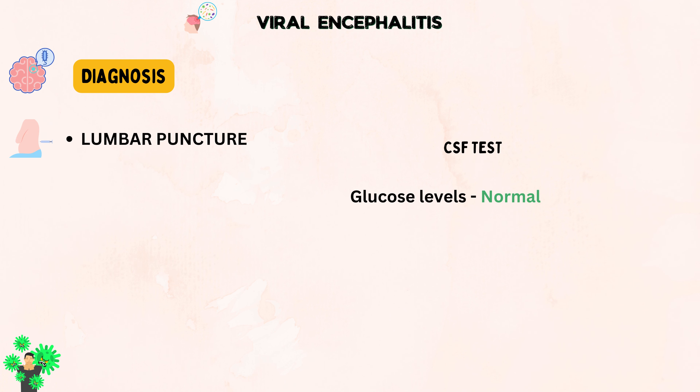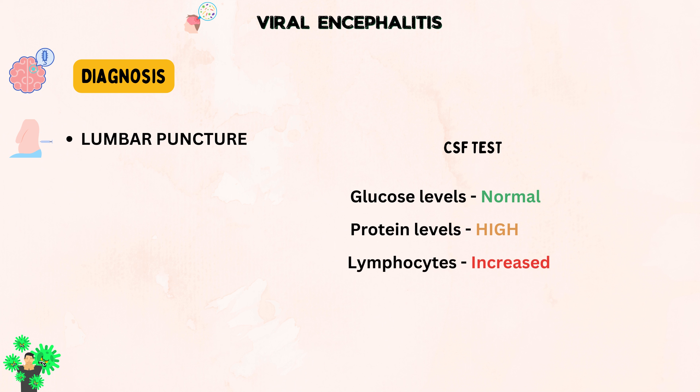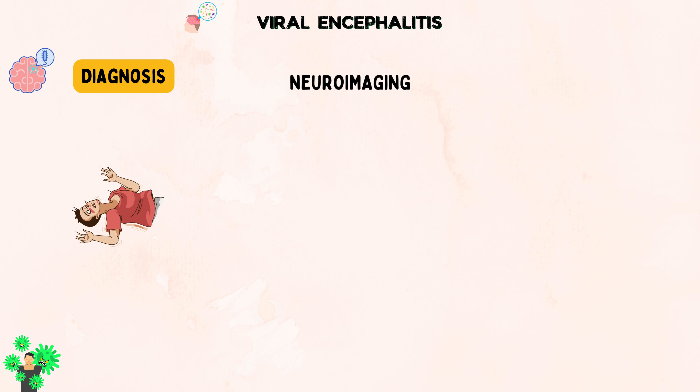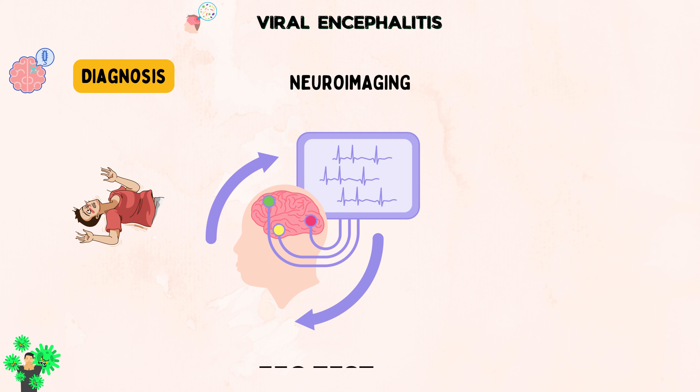In CSF tests, glucose levels are usually normal, while protein levels might be moderately high, and there might be an increase in certain white blood cells called lymphocytes. However, about 10% of patients might show normal CSF results. For patients experiencing seizures, an EEG might show abnormal brain activity.